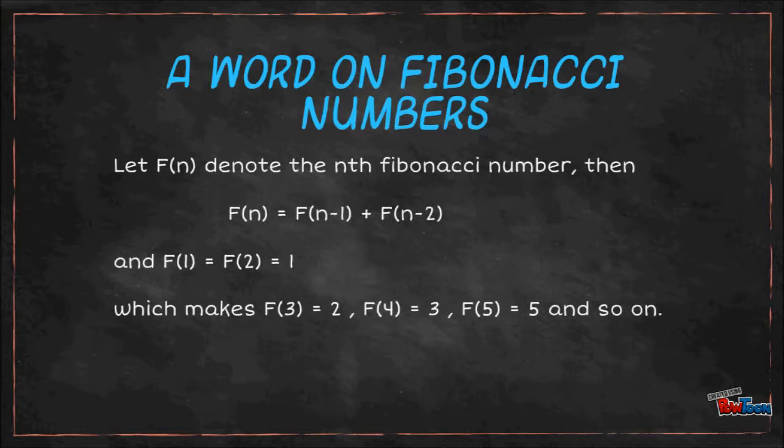Which makes F(3) equal to 2, F(4) equal to 3, F(5) equal to 5, and so on. Our task here is simple. Given an integer n, we have to calculate the nth Fibonacci number, or in our notation, F(n).